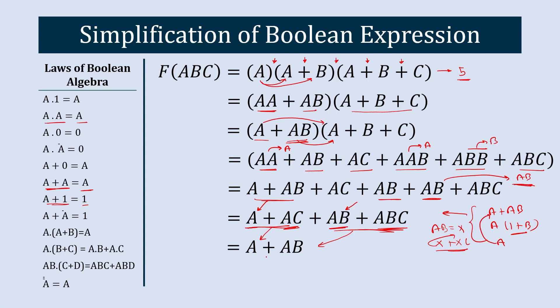Applying the same step again, A plus A·B results into A. So the fully simplified version of this equation is just A — whatever input we give as A, the same comes as output. There is no single defined way to solve a Boolean expression; this is one way. You can find your own way to solve the same Boolean expression.